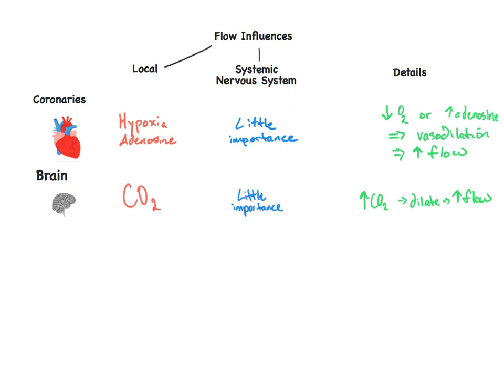You've covered some aspects of skeletal muscle before, and later we will dive into the systemic circulation that happens during exercise. Circulation to our muscles is quite important, but we want to control this flow. Hypoxia is going to exert regional control during times of exercise, along with lactate and potassium levels.